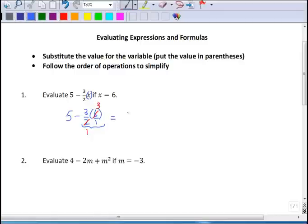So this becomes 5 minus 3 times 3. Again, doing my multiplication, this is 5 minus 9, and 5 minus 9 is negative 4.